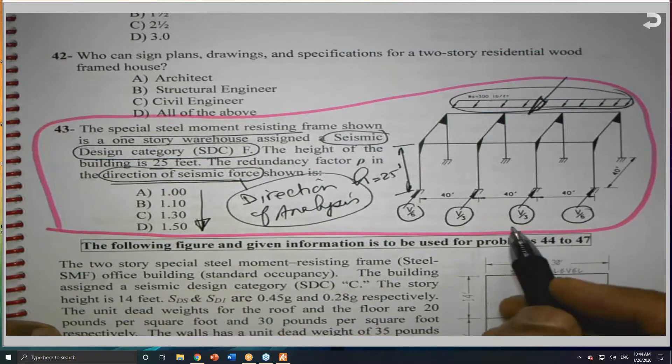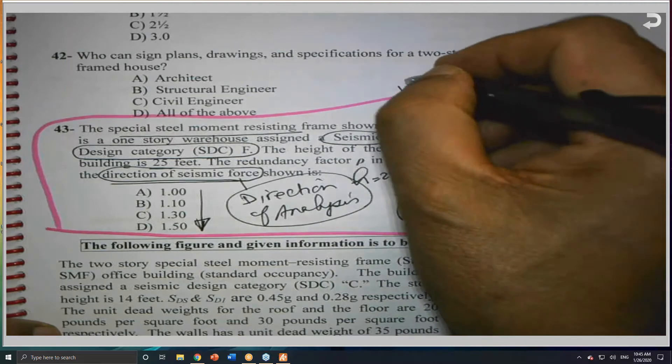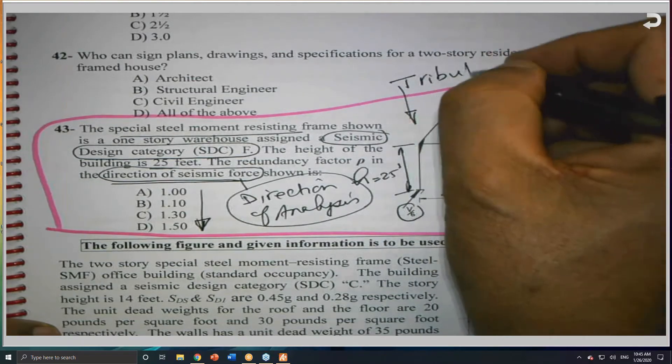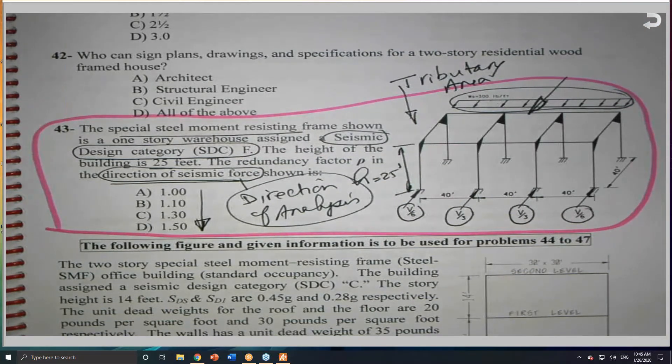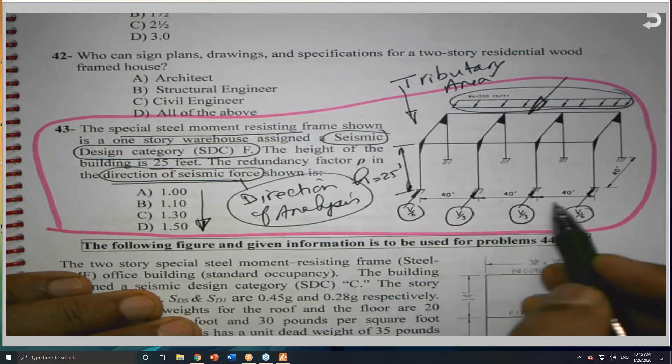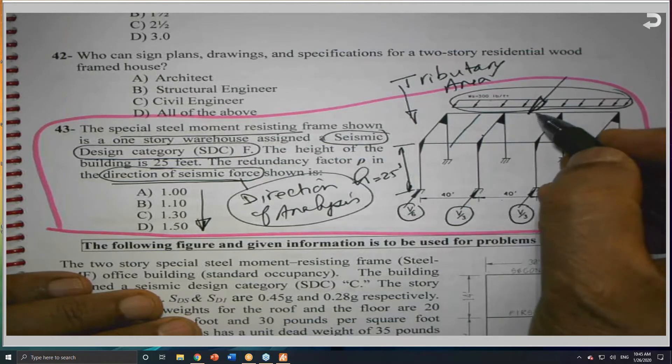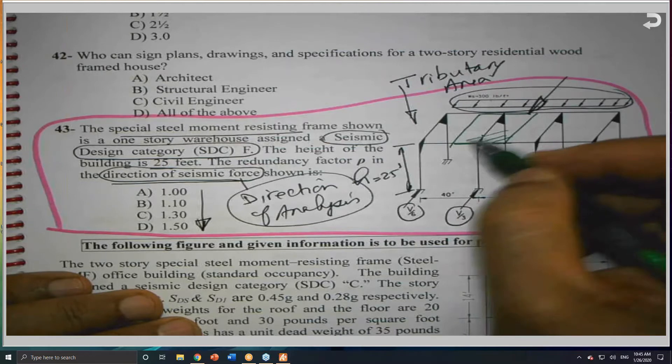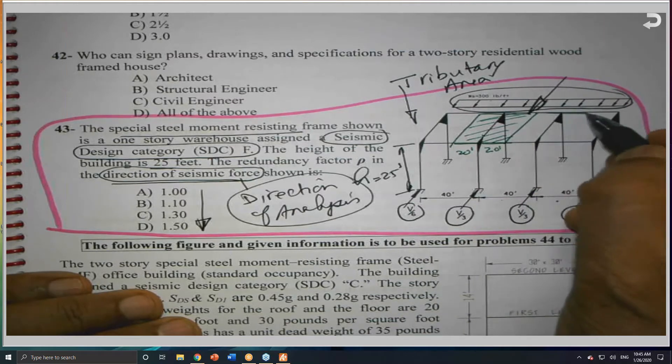In fact, we are going to see this later on in our analysis. Something is called, and I'm sure that you heard this term before in your undergraduate, something we call it a tributary area. What is a tributary area? One of the analysis that's permitted by the code is to get the load distributed based on the tributary area. This is 40 feet, and this is 40 feet, and this is 40 feet. That means that this frame here is going to carry half of the width from here to here.